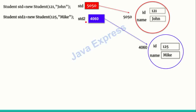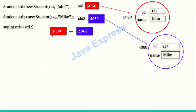When we compare std == std2, we know the content of these two objects is different, but really what we are doing is: 5050 == 4060, which is false. std and std2 are not objects themselves — they are reference variables which point to objects in memory. std2 points to one object and std points to another. Both have different references, so the == operator returns false. The == operator compares the references of two objects.